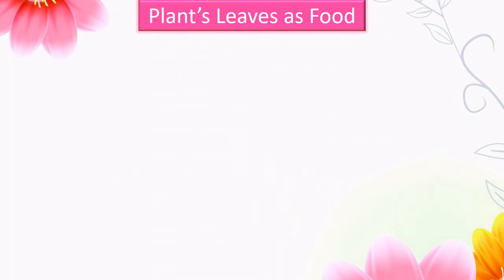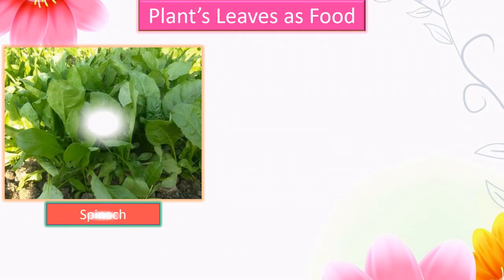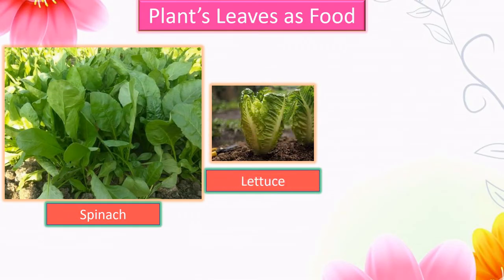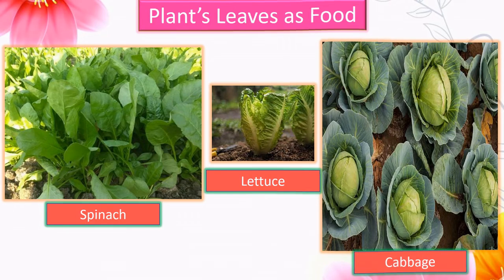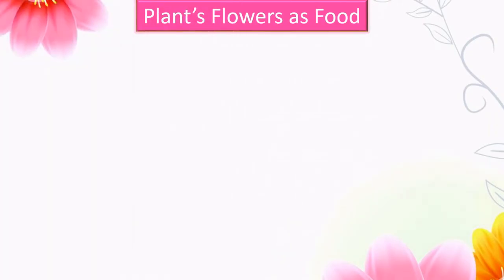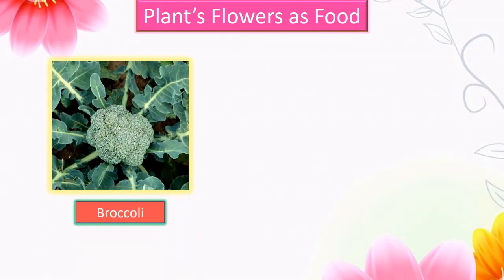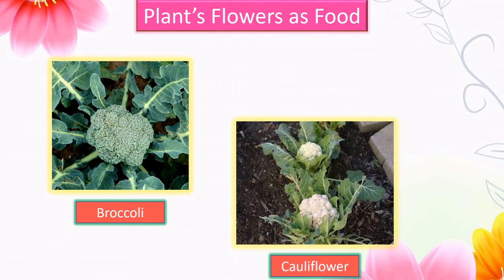Now we will see plant leaves used as food — examples are spinach, lettuce, and cabbage. Plants' flowers are also used as food — examples are broccoli and cauliflower.